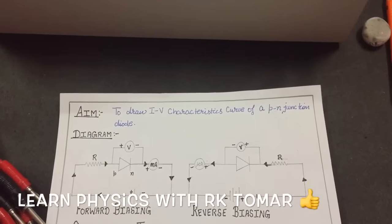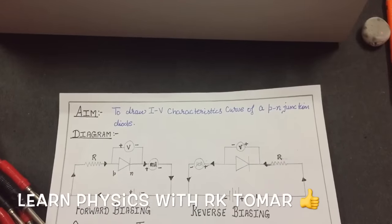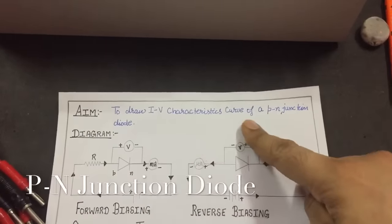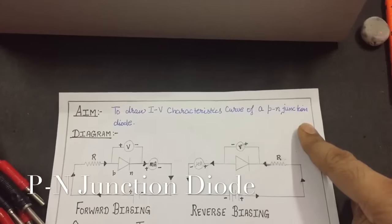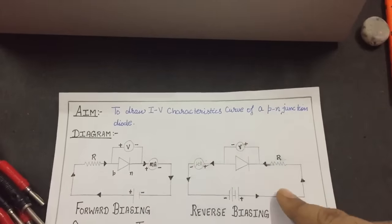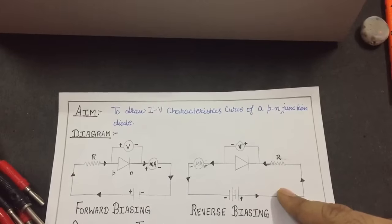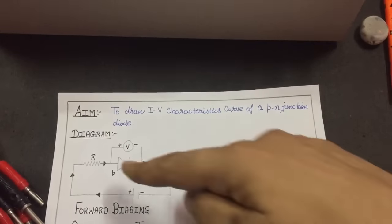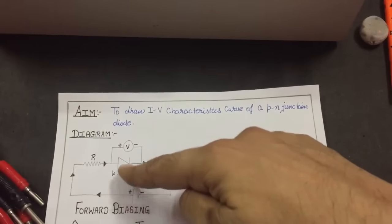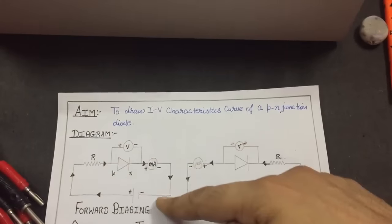Hello everyone. In today's video we are going to conduct an experiment to draw the IV characteristics curve of a p-n junction diode, both in forward bias and reverse bias. As you have already done in your theory class, forward biasing of a diode means when the P side is at higher potential as compared to the N side.